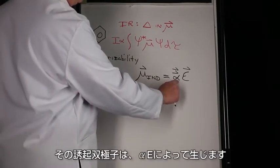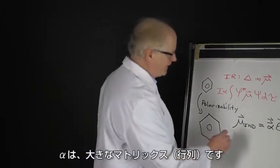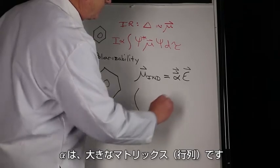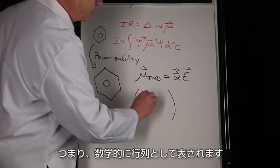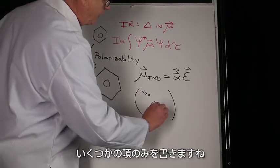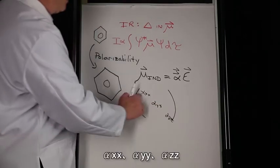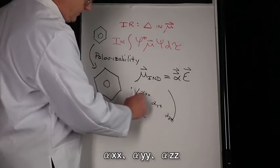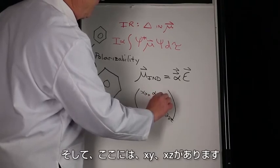What is alpha? It's represented mathematically as a matrix, and I'll just draw a few terms. Alpha xx, alpha xy, alpha xz, yy, zz, and then here you have x, y, z.